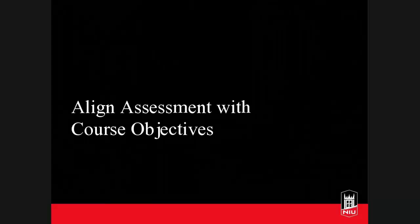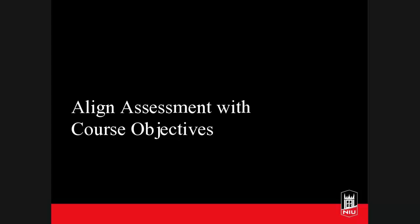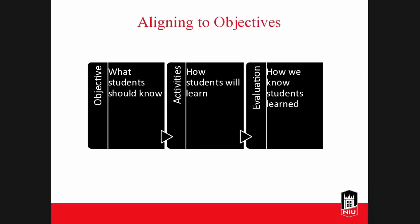The first principle I mentioned was aligning assessments with course objectives. I'm sharing a simple graphic that clearly shows a process you can use to align the objectives and the assessments. First, you need to think about the course objectives — specifically, what are those objectives? What do you want the students to know or be able to do at the end of the course, or at the end of a certain topic sequence?